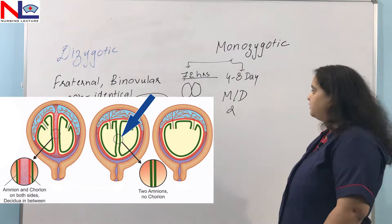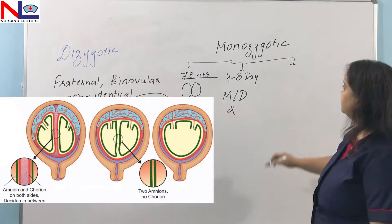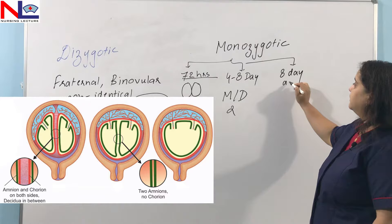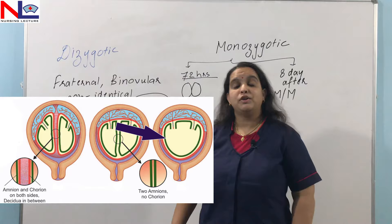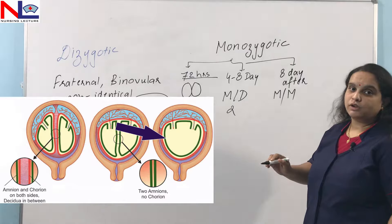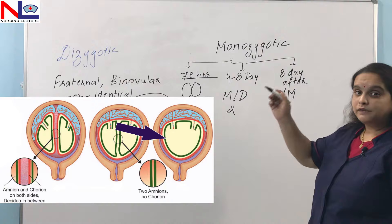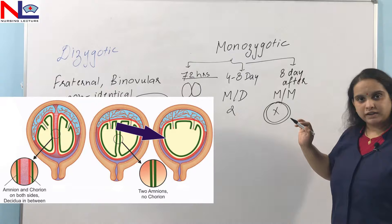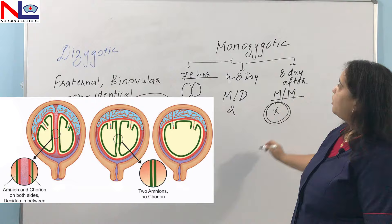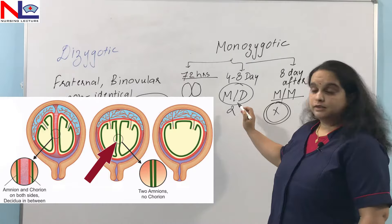If division occurs after eight days of fertilization, the variety is MM — monoamniotic monochorionic — because both the amniotic cavity and chorion have already developed. The intervening membrane between the fetuses completely disappears since they share only one gestational sac. Out of these three varieties, the most common is MD — monochorionic diamniotic.